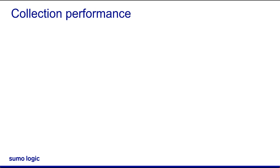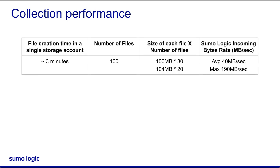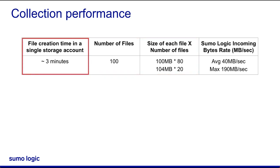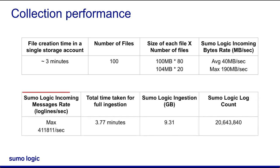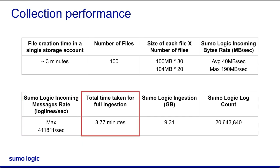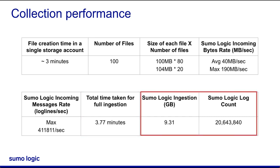Here are some sample performance results of collection through Azure Block Blob Storage, although note that actual performance will vary based on network conditions. These results were compiled using 100 files of 100 megabytes each. The file creation time in a single storage account was around 3 minutes. The average Sumo Logic ingestion rate was around 40 megabytes per second, with the maximum ingestion rate reaching up to 190 megabytes per second. The maximum incoming messages rate was about 400,000 log lines per second. The total time taken for full ingestion was a little less than 4 minutes. A total of 9.3 gigabytes of data was ingested, with a log count of about 20.6 million.